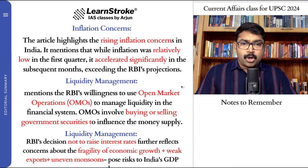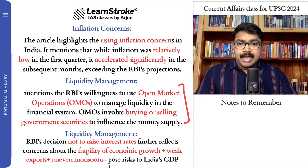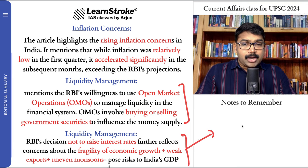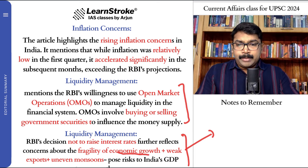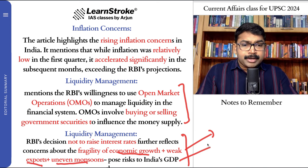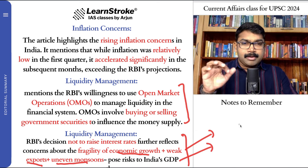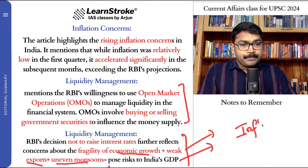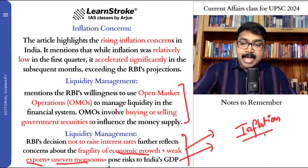RBI's decision not to raise interest rates further reflects concern about important economic challenges. One is fragile economic growth, plus weak imports and weak exports. The exports are getting weak, and there's an uneven monsoon. This all poses an important risk to India's GDP. Very uneven economic growth, weak exports, and uneven monsoons are all creating problems on top of inflation.